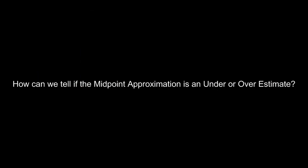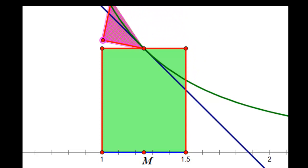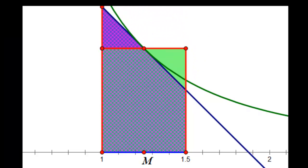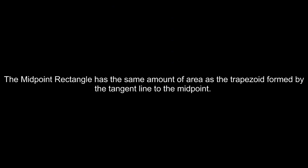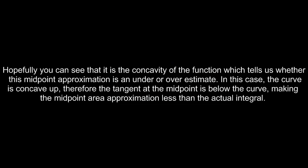How can we tell if the midpoint approximation is an under or over estimate? I draw a line tangent to the curve at the midpoint, take the triangle area above the tangent line, and rotate it so it sits on top of the rectangle — showing the midpoint rectangle equals the trapezoid formed by the tangent line. Since the function is concave up, the tangent line lies below the curve, making the midpoint approximation an under-estimate.